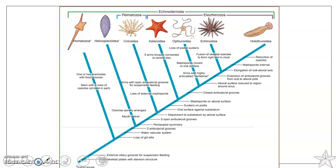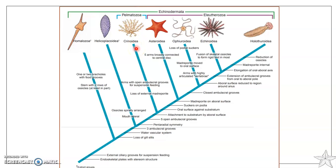Asteroidea is more ancient than Ophiuroidea, and many characters are common — they have podia, attachment to substratum by the oral surface — these characters can also be found in Crinoidea. This figure shows the characters as well as how ancient each group is. Among the living Echinodermata, Crinoidea is the most primitive, and their fossil record extends back to the early Cambrian, almost 570 million years ago.